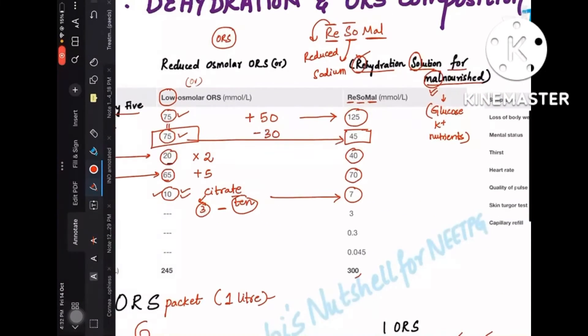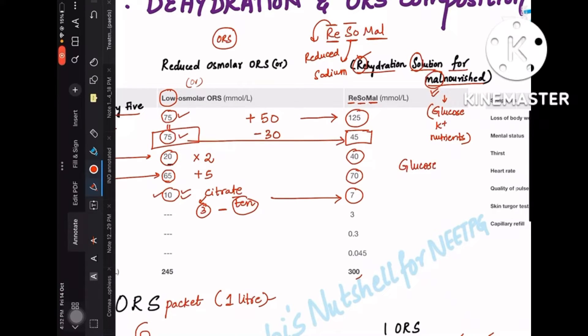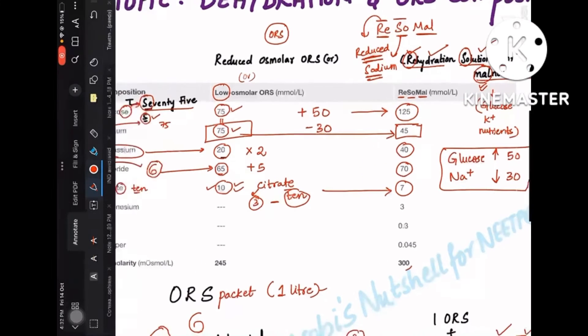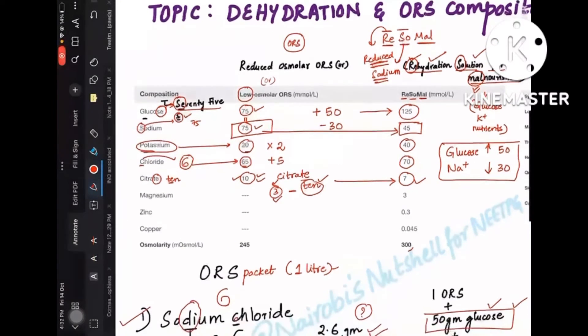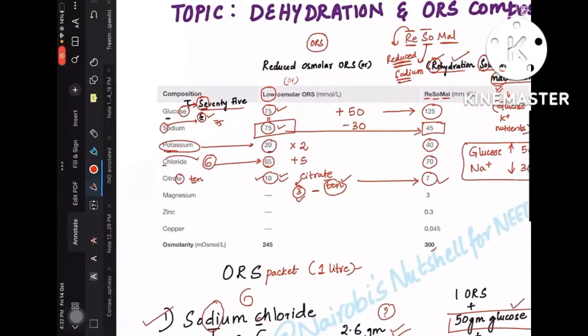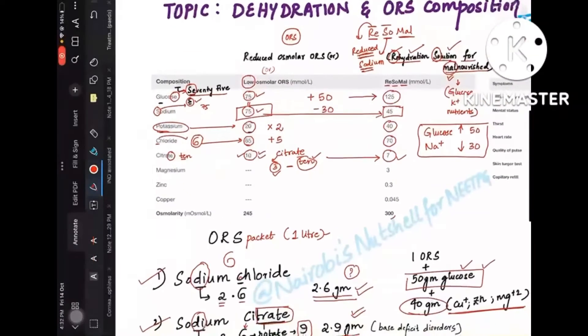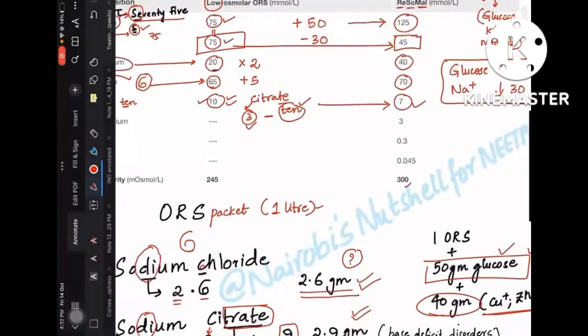So just remember that glucose increases in ReSoMal by 50, and sodium reduced sodium—our mnemonic. This is our mnemonic, not the full form. Don't confuse; the full form is rehydration solution. So you have to decrease the sodium by 30. These are the most important values that you need to know, and the citrate from the mnemonic 10 minus 3 is 7. Remaining, you have to just remember—I didn't find any mnemonic for potassium and chloride. So total it should be 300. ReSoMal should be 300 and normal ORS should be 245.